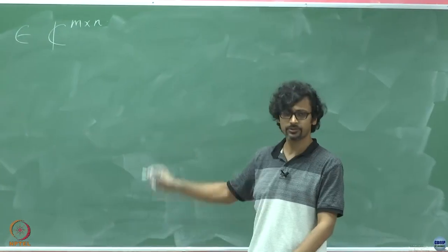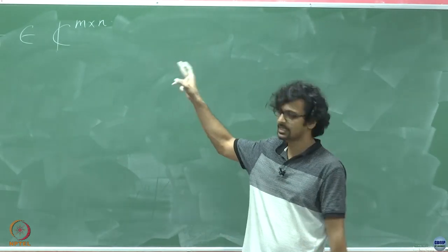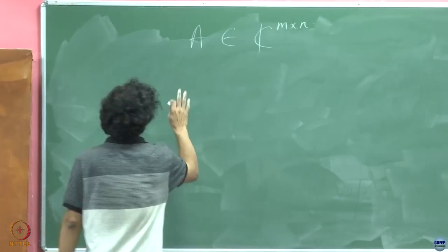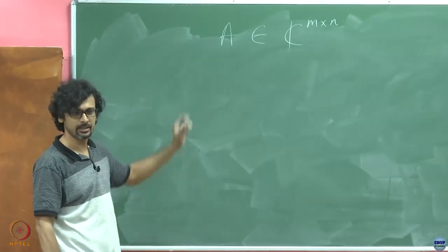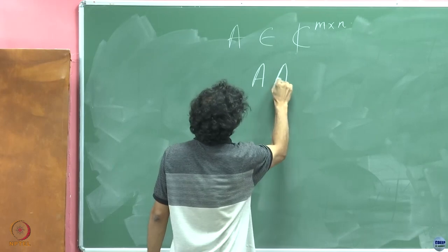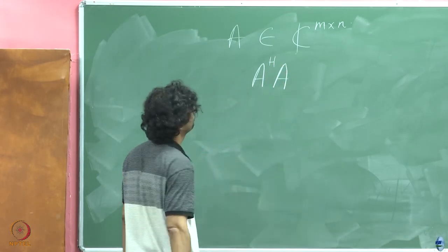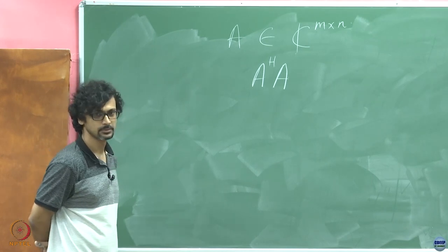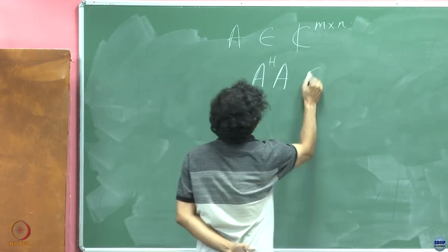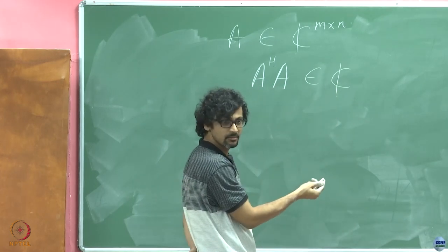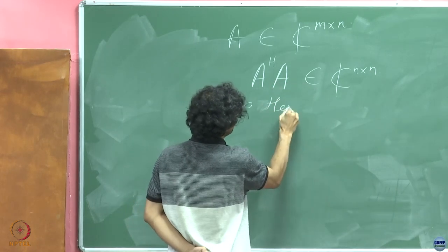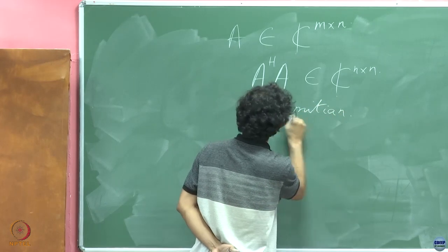Everything we are going to do hereafter, you can check that whether you take n less than m, the same idea will still carry forward. So this is the matrix — no symmetry, nothing. The first thing we do is we look at A^H A. No matter what A is, A^H A is of size n×n and is Hermitian. I shouldn't use the term symmetric when dealing with complex matrices — so it is Hermitian.